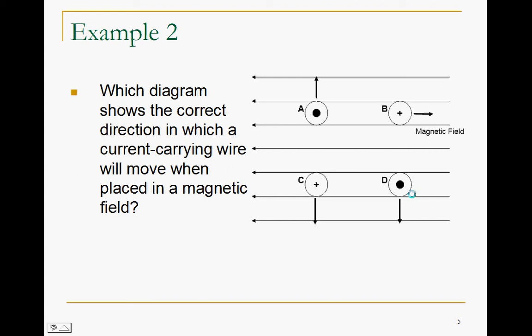Let's take a look at example 2. Which diagram shows the correct direction in which the wire will move when placed in the magnetic field? First of all, the magnetic field has a series of arrows pointing from right to left. This shows that the right hand side, the field is north, and towards the other side, the field is south. So this is where your index finger will point, using Fleming's Left Hand Rule.